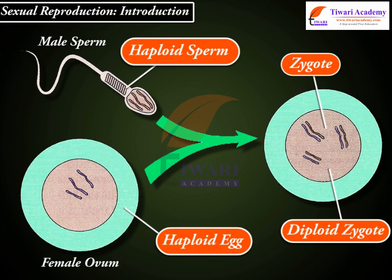Some animals keep the zygote in their bodies until it is a full-grown baby. The time between the forming of the zygote and the baby's birth is called pregnancy. Other animals do not keep the zygote in their bodies but lay an egg, and the zygote grows inside the egg until it is ready and the baby animal hatches.